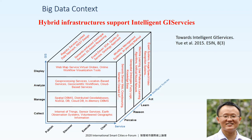Together, we need a hybrid infrastructure — from big data infrastructure behind the service to the spatial data infrastructure in front of the service. We combine them together. This graph shows three dimensions: the first is the traditional GIS dimension — data collection, management, analysis, display. The second is the service dimension — service published, discovery, exchange. And then the intelligent system dimension — how we perceive, reason, learn, act. We combine these dimensions together to support an intelligent GIS service.